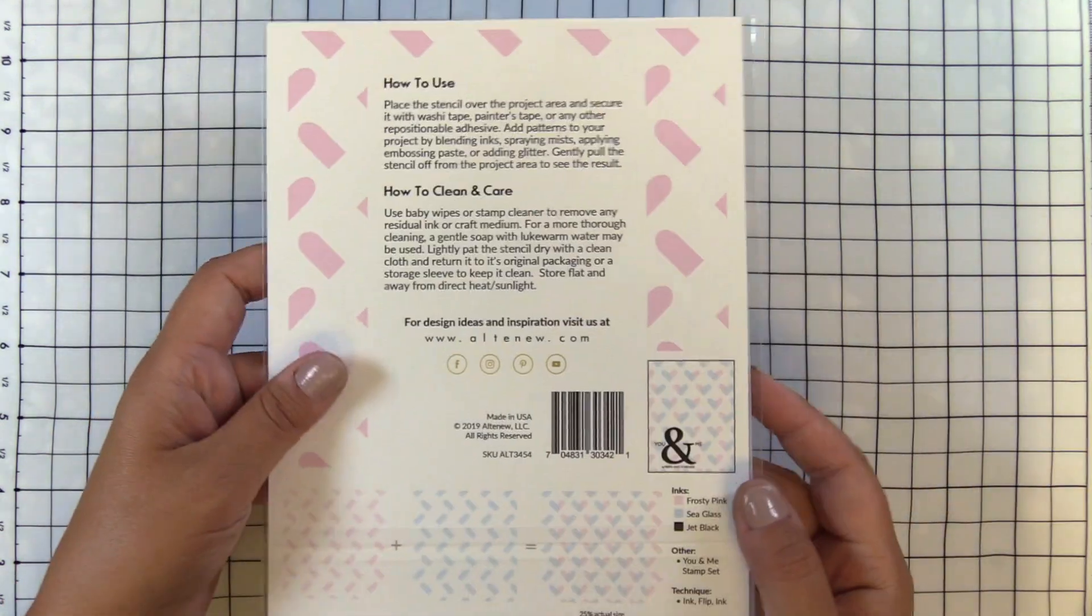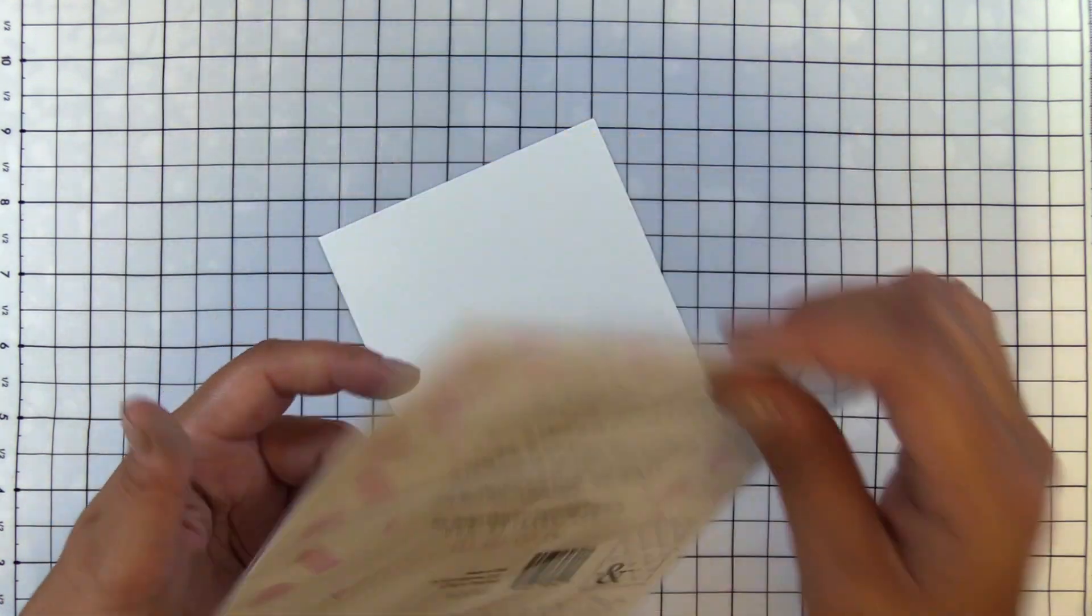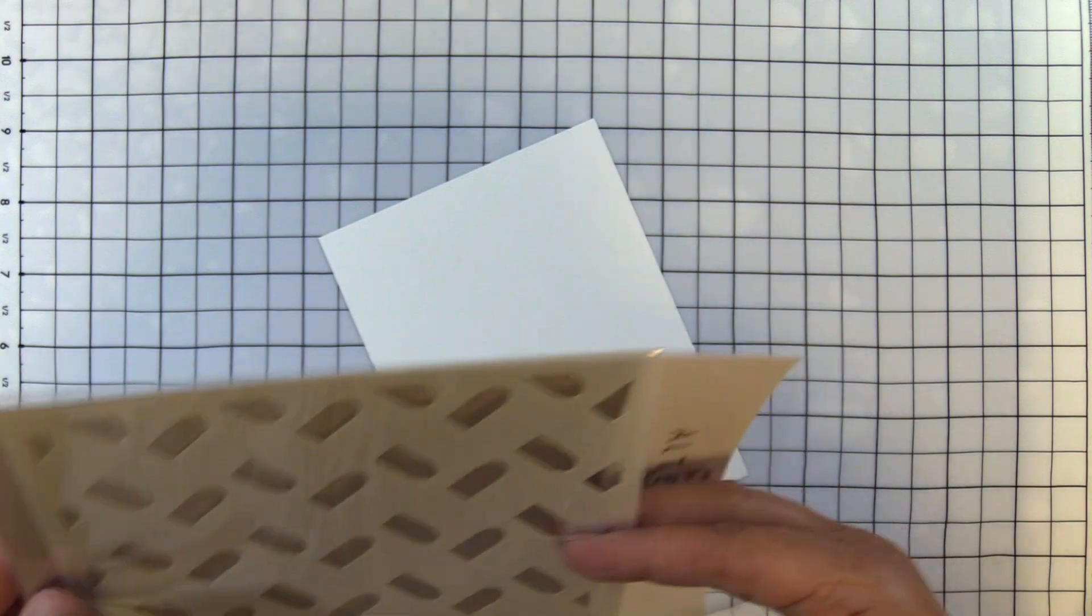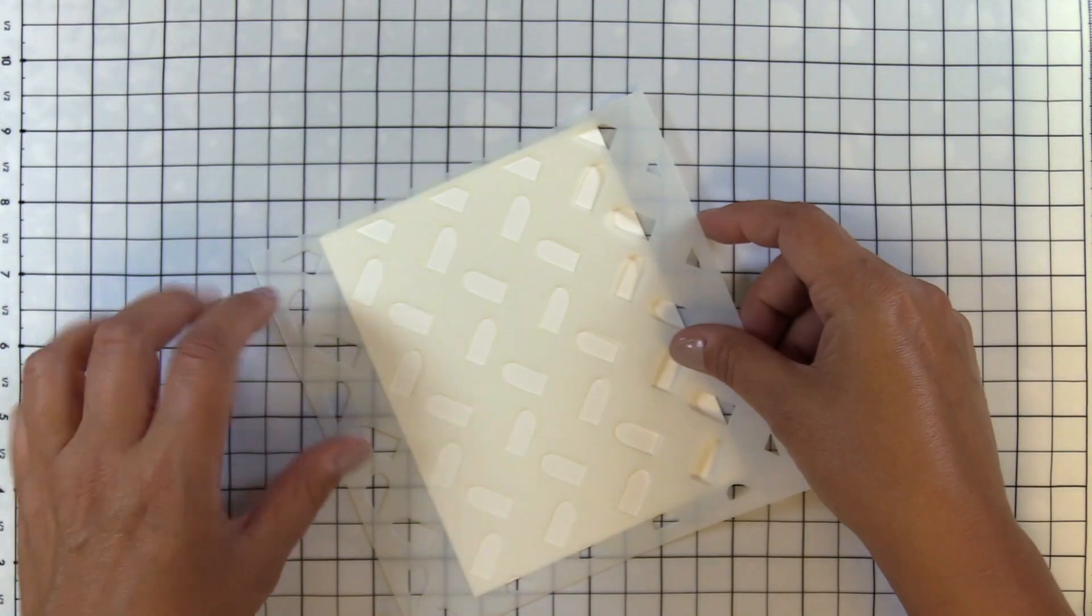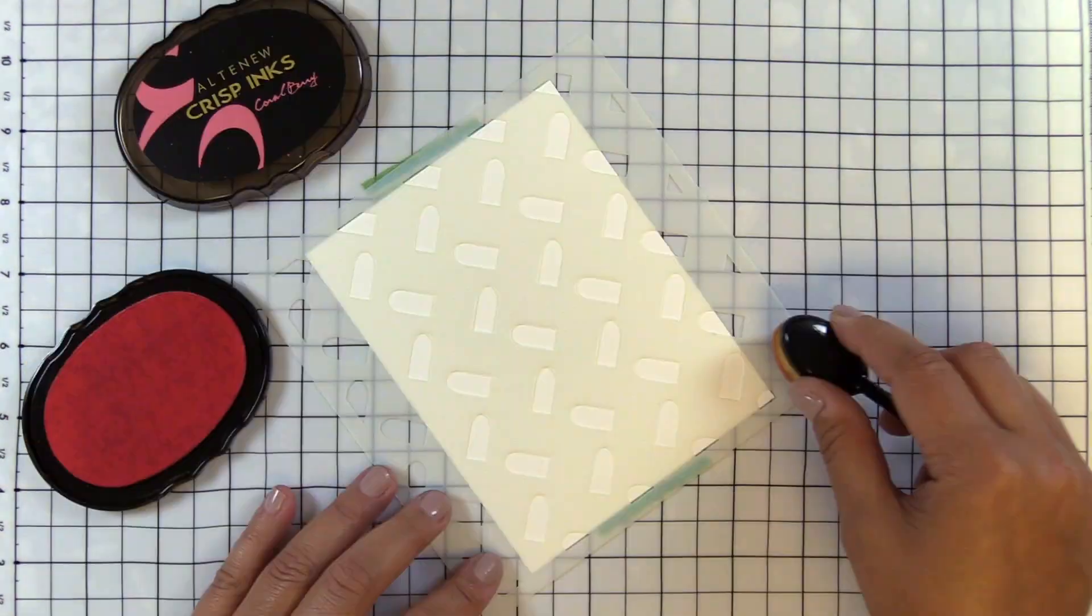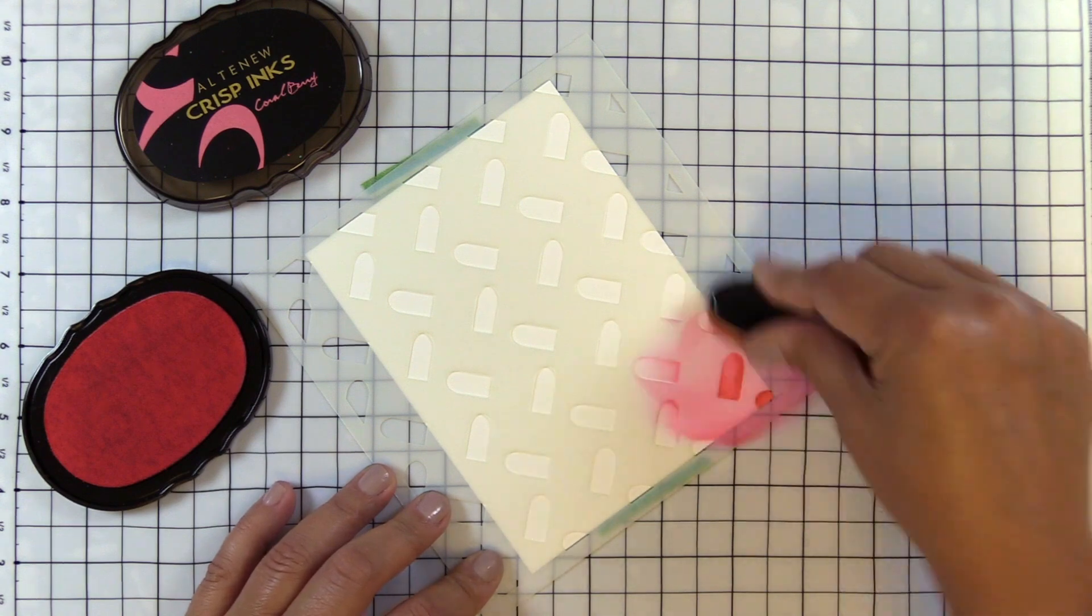This is Color Block Heart Stencil from Altenew. This stencil measures 6x6, perfect for any A2 size cards, journal pages, scrapbook layouts, or mixed media arts.